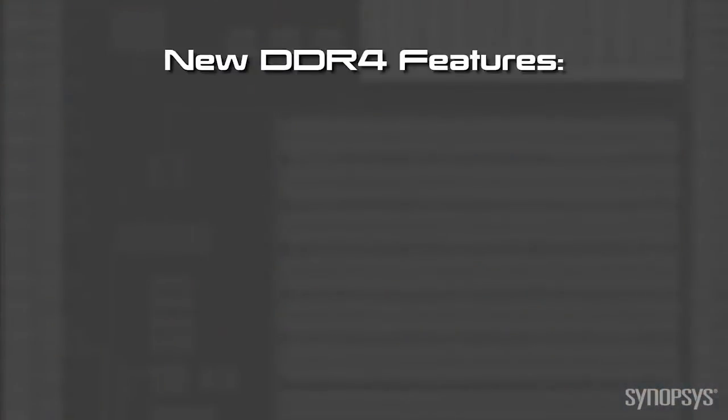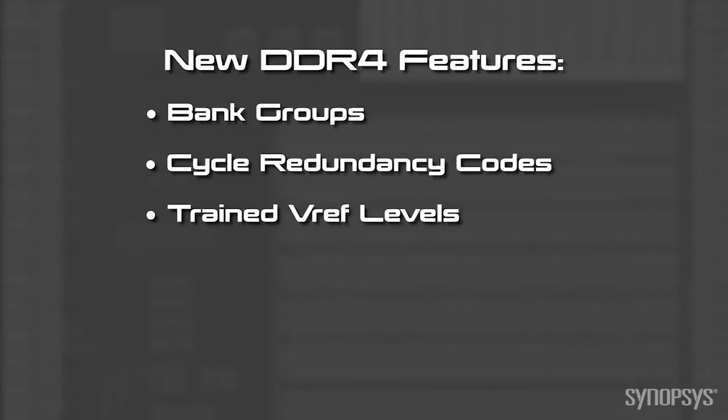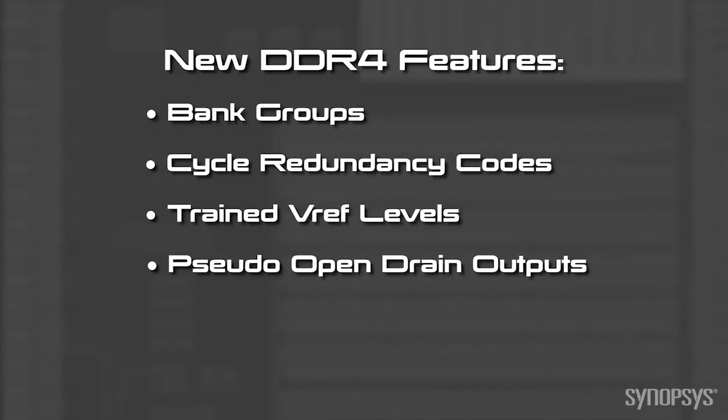With DDR4, there are a lot more features that have been implemented. You have features like bank groups, cycle redundancy codes, write references, and pseudo-drain outputs. From a user perspective, there are certain complexities to consider — for example, the signal integrity environment. With the bank grouping, for embedded applications, what you need to do in DDR4 is manage the bank groups through a technique called ping-ponging, which is new to DDR4. Some fantastic improvements with DDR4, but also some changes and challenges to designers.